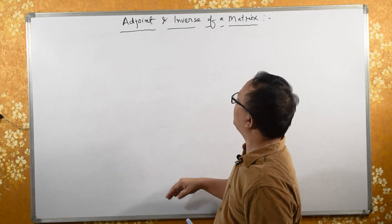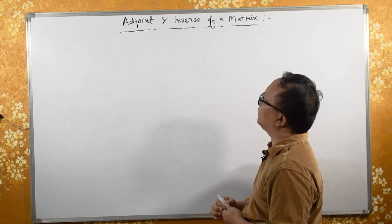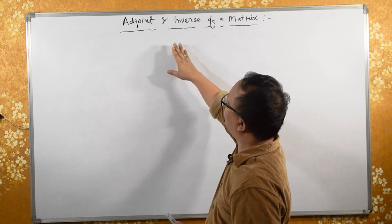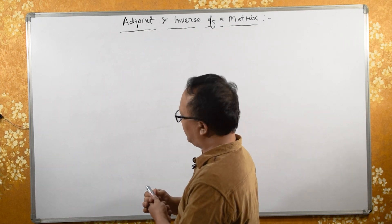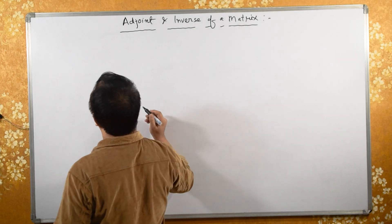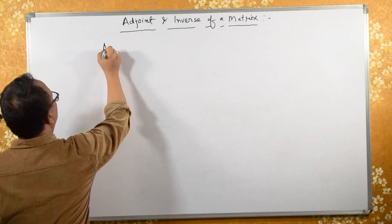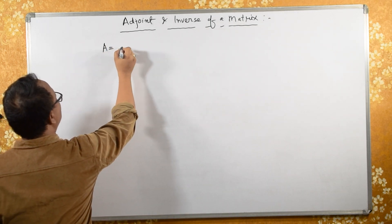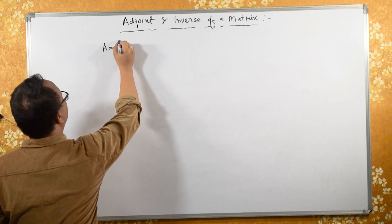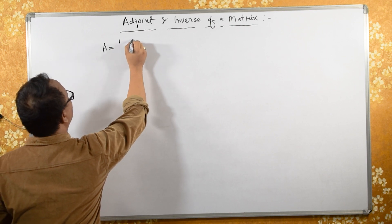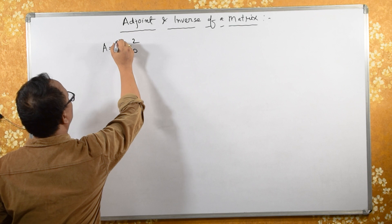In order to get the inverse of a matrix, we should know the adjoint, cofactor, minor, etc. Now let's take an example. Let matrix A equal to a 2 by 2 square matrix, say with elements 1, 2, 3, 0.